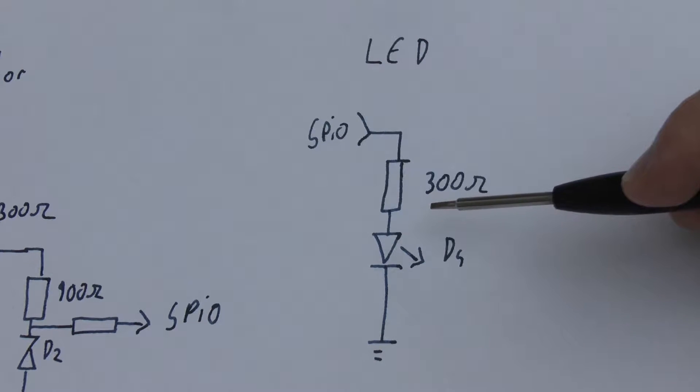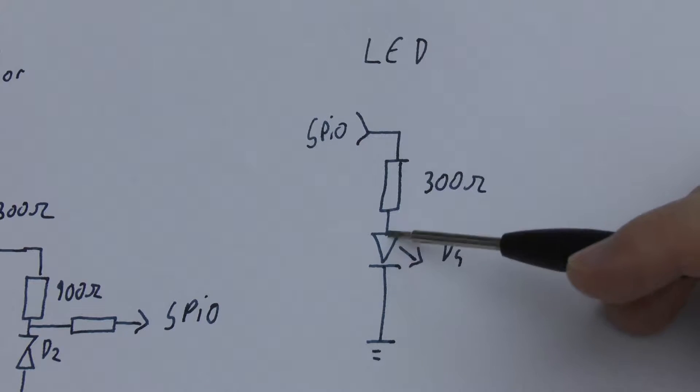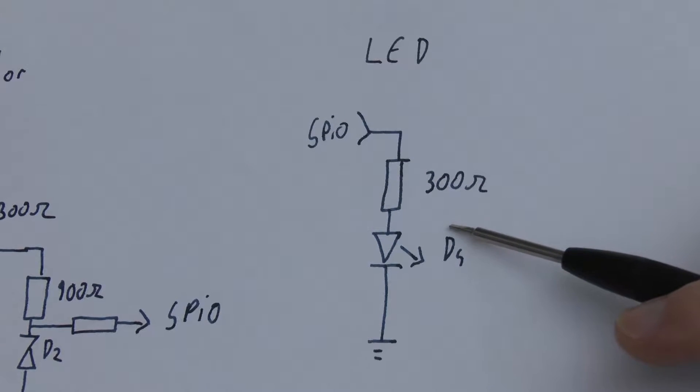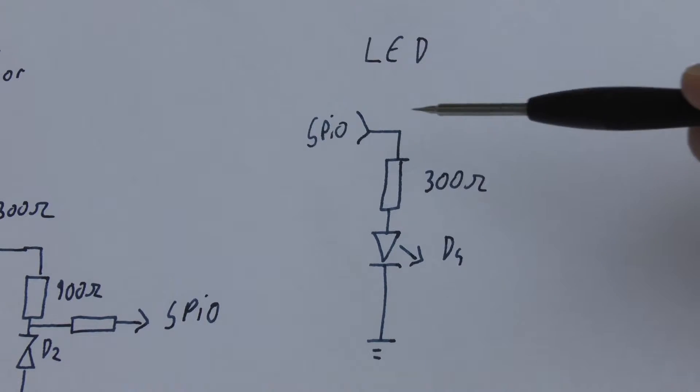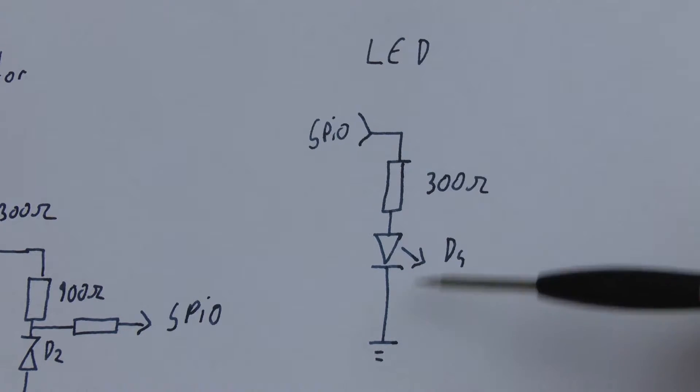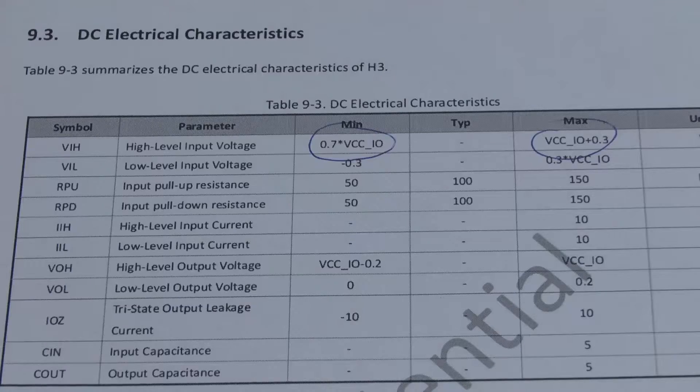One important aspect you need to keep in mind is that LEDs can fail in two ways. They can either become open, or they can become a dead short. And if they become a dead short, the situation is really critical, because in that case, the GPIO essentially is connected to ground only via this protection resistor.